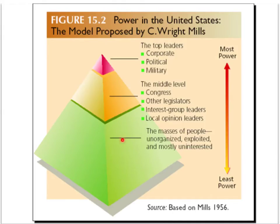This pyramid represents the distribution of power in America according to C. Wright Mills. At the apex we've got the most powerful group: the American power elite, which was made up of three groups — the corporate elite (business leaders), the political elite (the president and other key members of the executive branch of government), and the military elite.